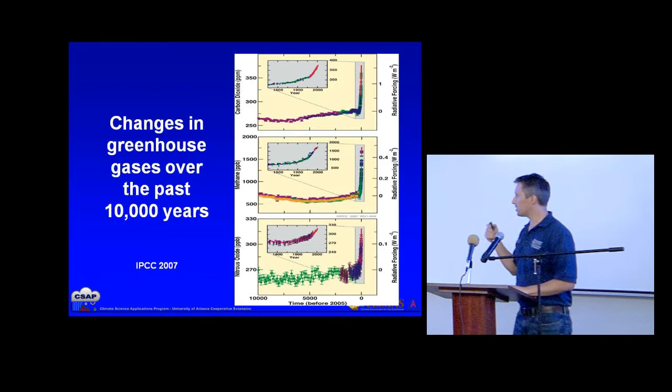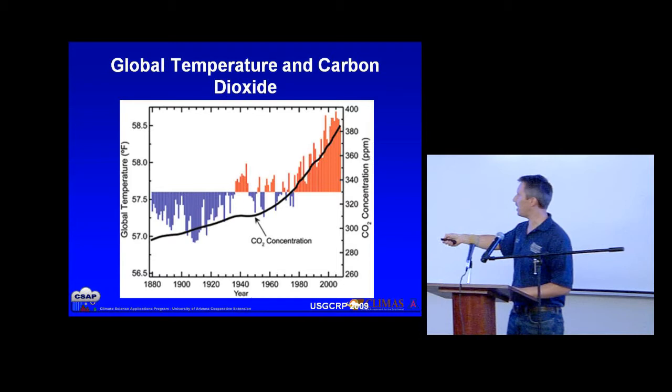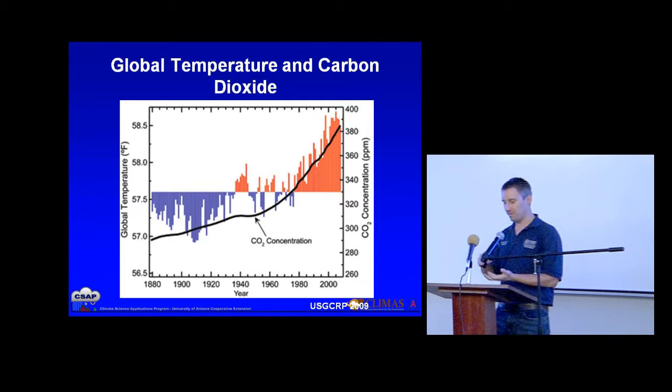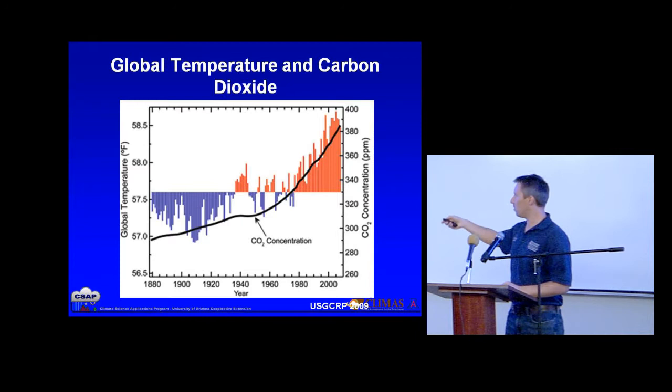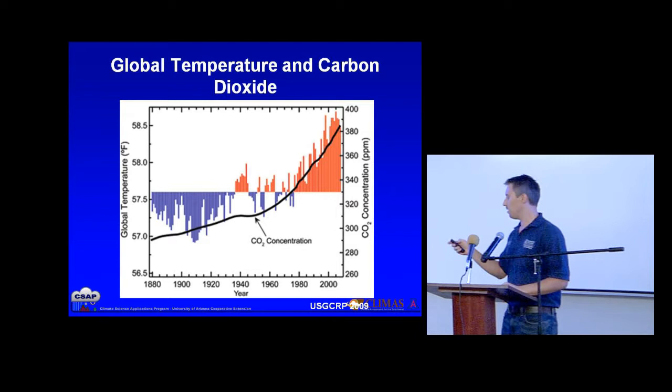Here's another time series: global temperature and carbon dioxide. Again, this alone is just correlative. But if you put it together with past changes and our understanding of the radiation balance — the expectation that changing greenhouse gases would produce a temperature change — and then you plot them together, that gives you more evidence that the system is behaving correctly based on your conceptual model.